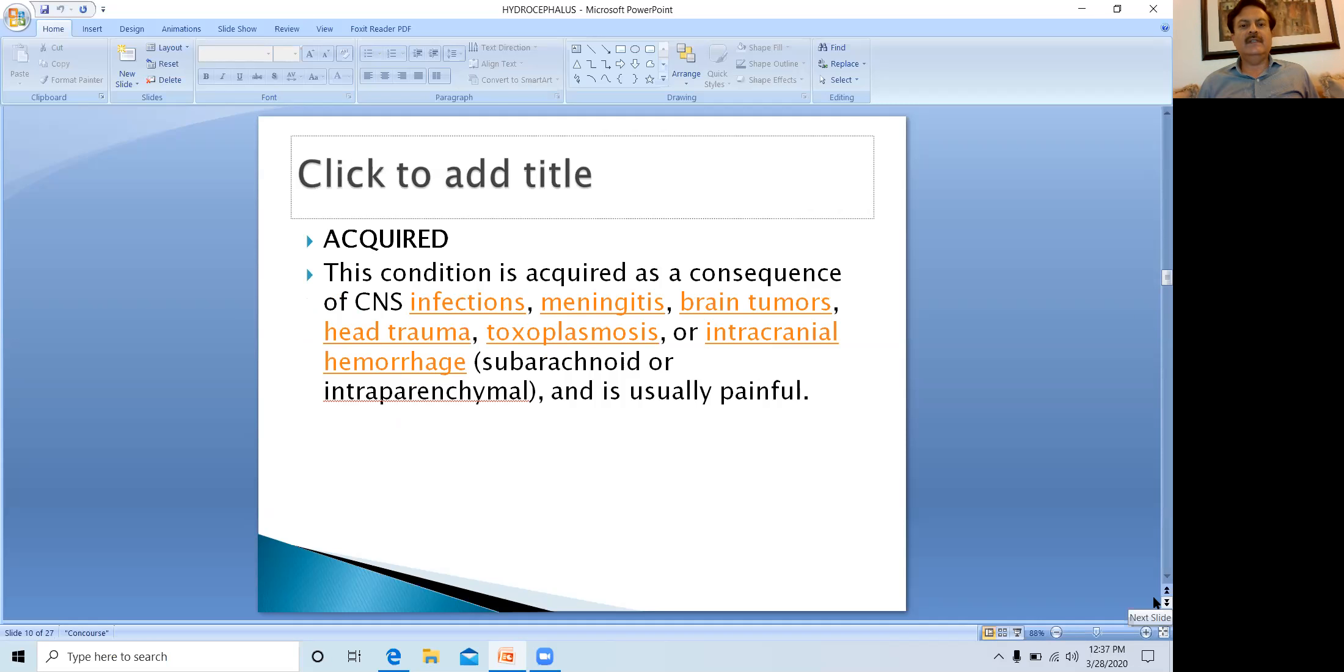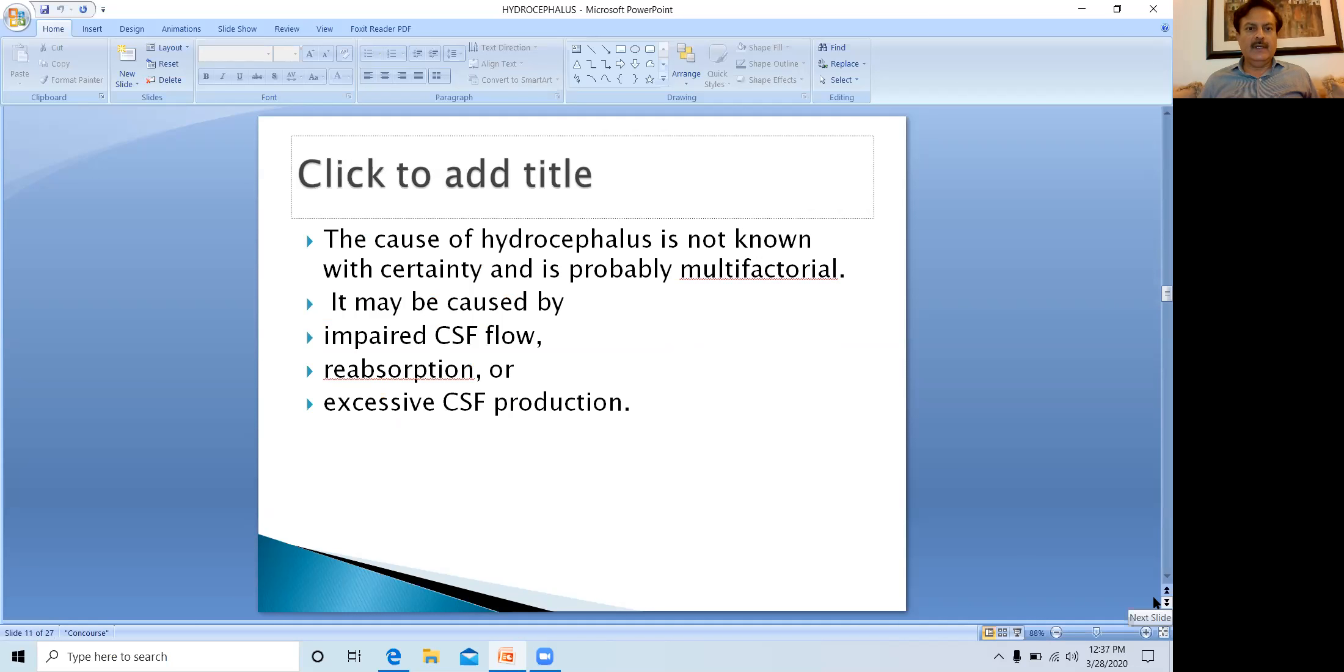Acquired hydrocephalus is acquired as a consequence of sinus infections, infections of the brain like meningitis and encephalitis, brain tumors, head trauma, toxoplasmosis, or intracranial hemorrhage such as subarachnoid hemorrhage or intraparenchymal hemorrhage. And usually it is painful. One difference is that congenital hydrocephalus is usually painless, while acquired hydrocephalus causes pain to the patient.